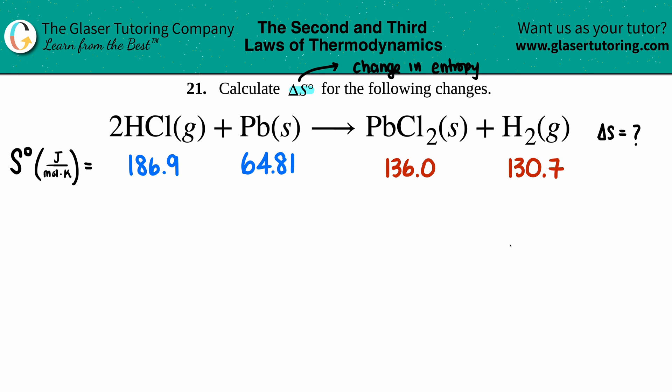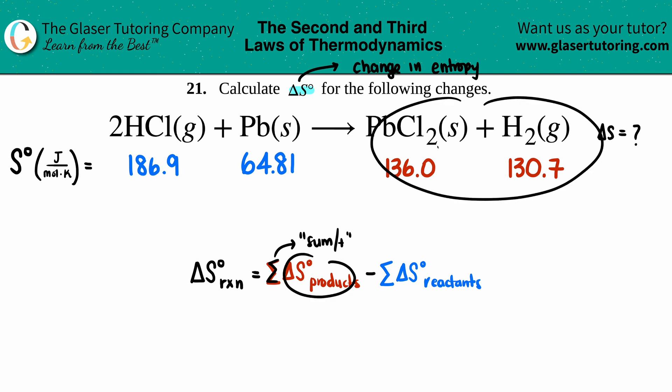Now what do we do with these values? We use the formula: delta S° for an entire reaction is the sum (this squiggly symbol means you add them up) of all your products minus the sum of all your reactants.